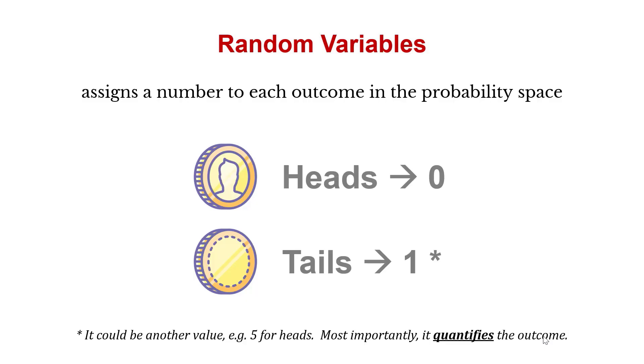Now we need to talk about what random variables are, because you hear those come up quite a bit in probability. Random variables assign a number to each outcome in the probability space. So maybe we say heads is 0 and tails is 1. It could be another value, maybe 5 for heads and 10 for tails. But most importantly, it quantifies the outcome.